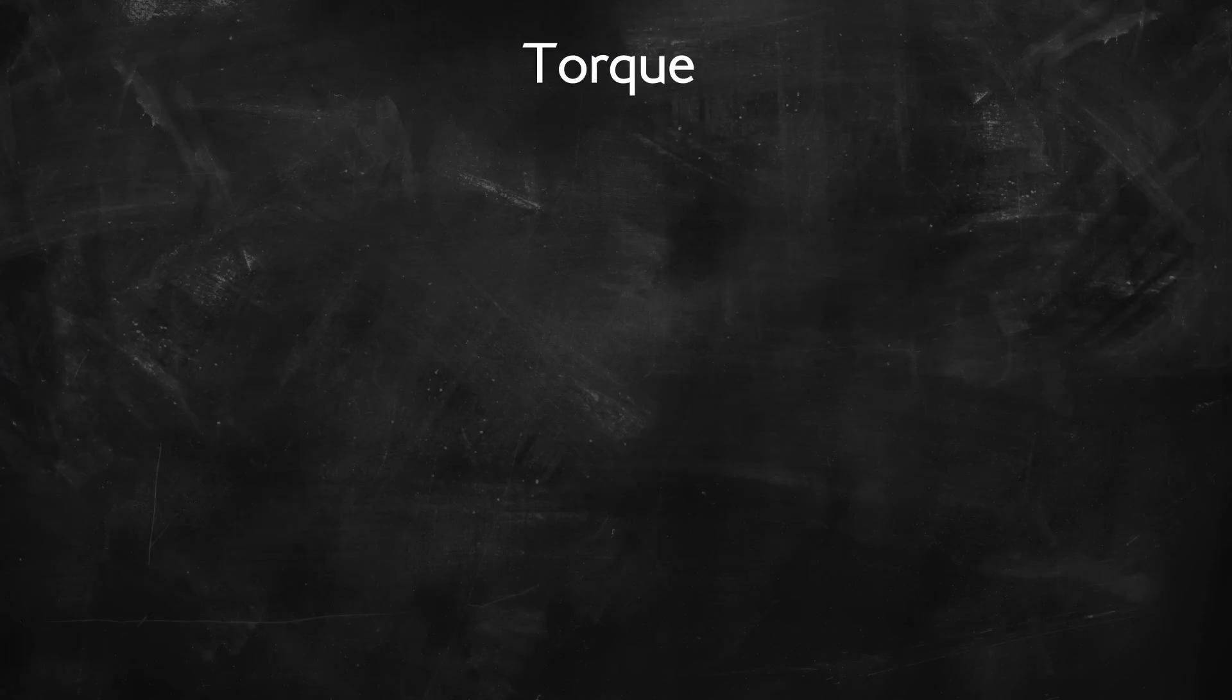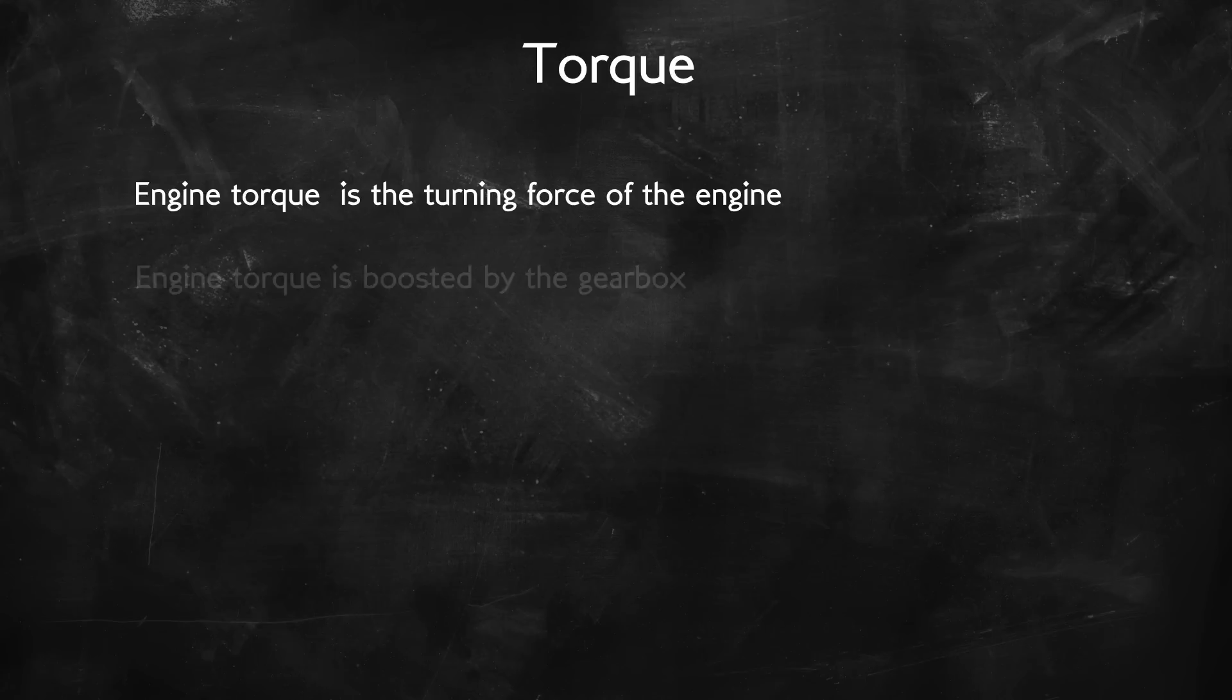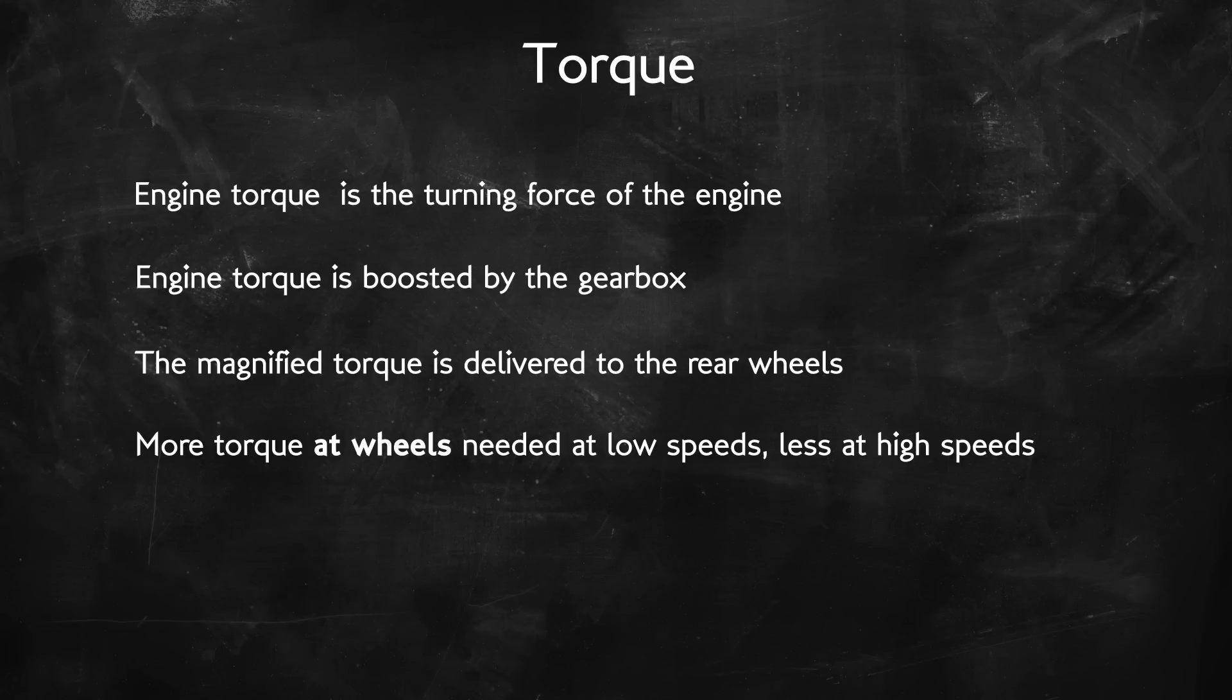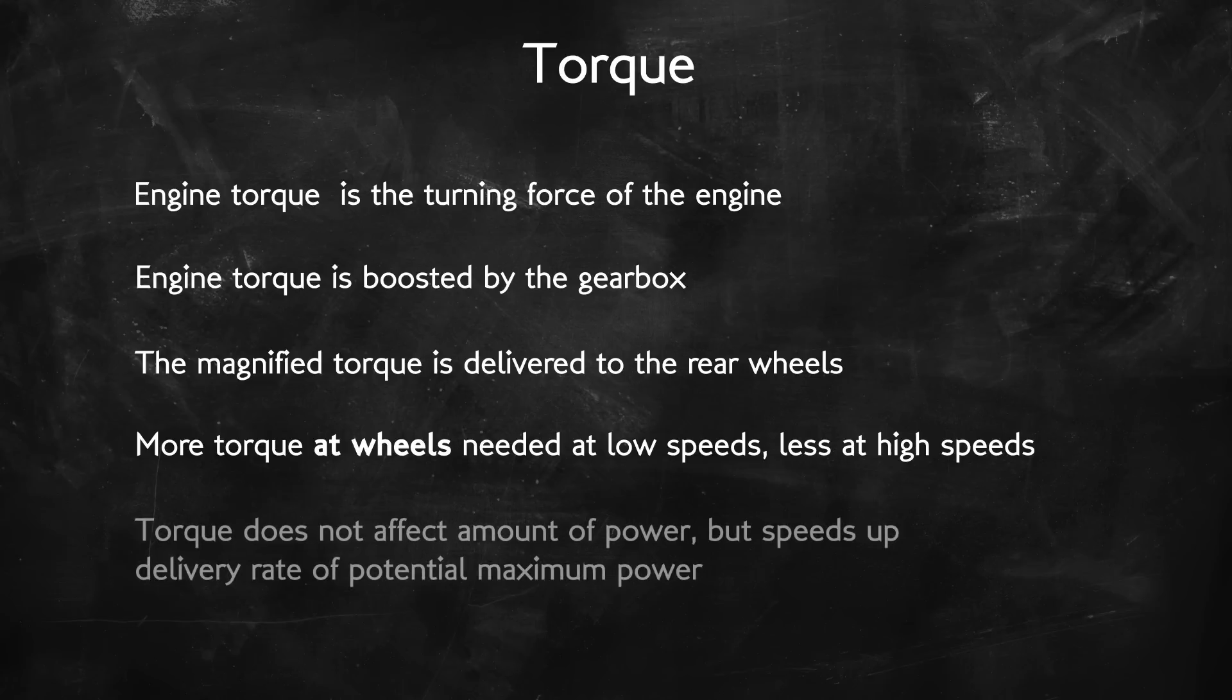So hopefully that's given you a better idea of what torque is. Engine torque is simply the turning force of the engine that's then translated down the drivetrain, manipulated by the gearbox to multiply it up and provide drive torque to the rear wheels. You need maximum torque at low speeds to get the car accelerating and lower torque at high speeds to keep the wheels spinning faster. Which is why high gears are smaller and do not crank the torque up as much as low gears. And torque does not affect the amount of power in the system, which is just the rate at which the engine delivers energy.